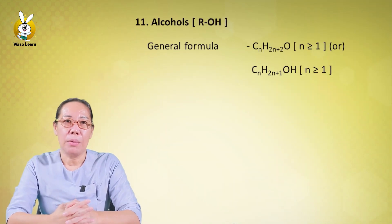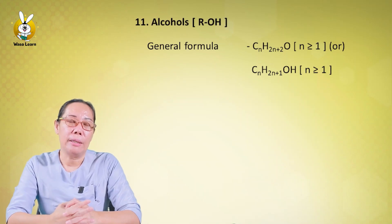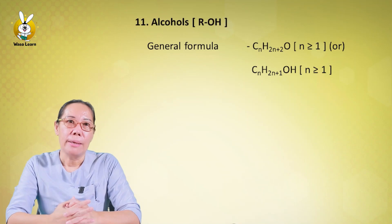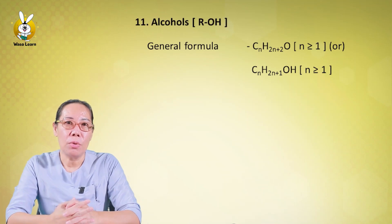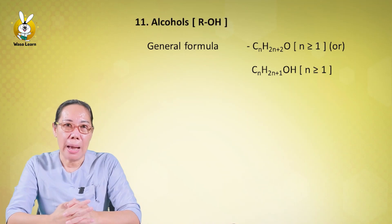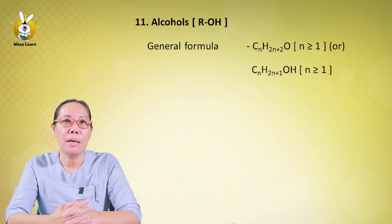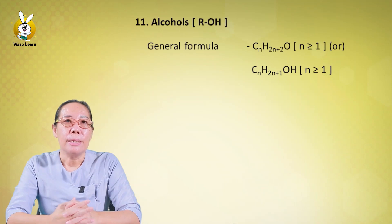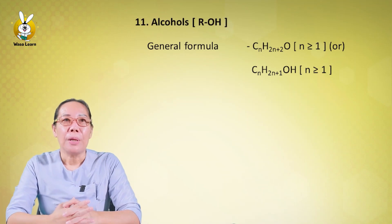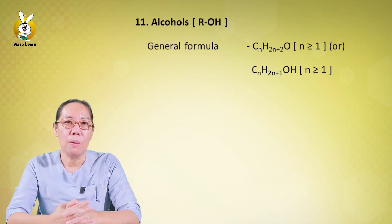Hydrocarbons mixed with alcohol synthesis generate ROH, where OH is the hydroxyl group. The general formula for alcohols is CnH2n+2O, also written as CnH2n+1OH, where n is greater than or equal to 1.